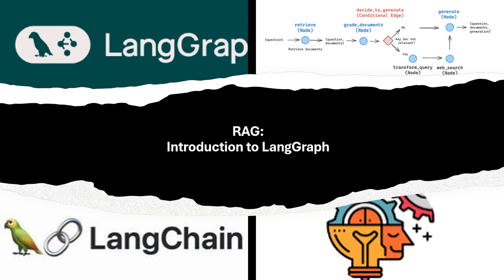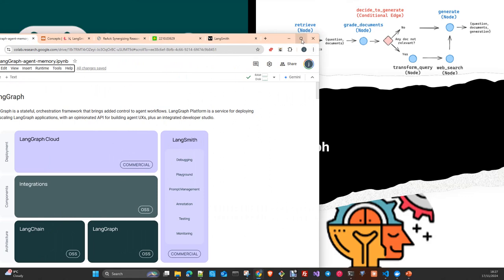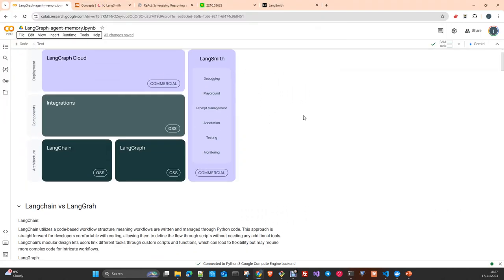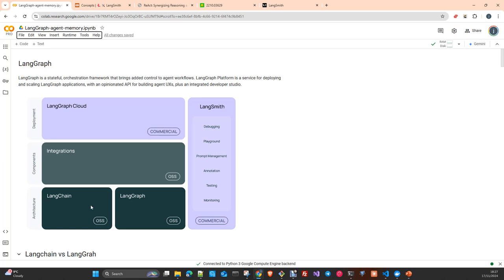LangGraph is an orchestration framework from the company LangChain, and similarly to the library or to the suite of libraries that we already know, it has the same purpose so we can create LLM-based applications, but changing the approach that we use when we use LangChain.